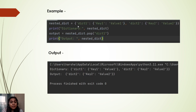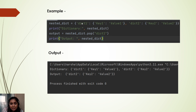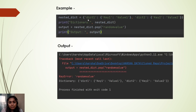Here we have taken a nested dictionary example. In this example, dictionary1 is the key and its corresponding dictionary is the value. When we use the pop method on this nested dictionary with the key dictionary1, in the output we can see that entire section is removed and only the dictionary2 key-value pair remains.